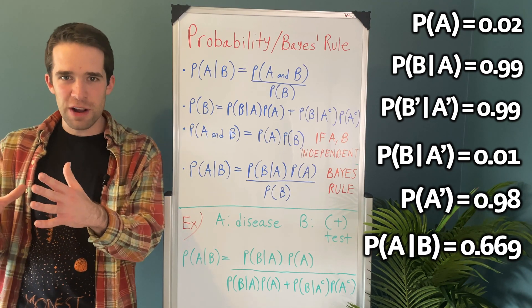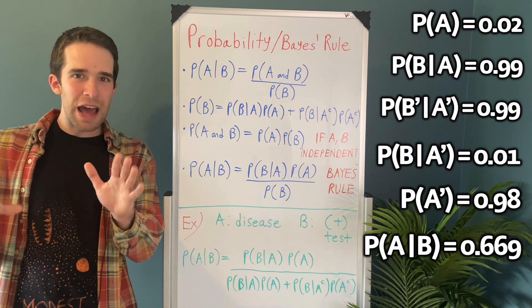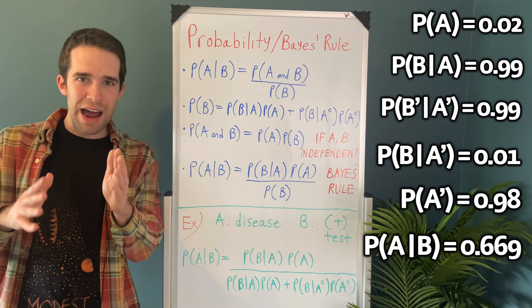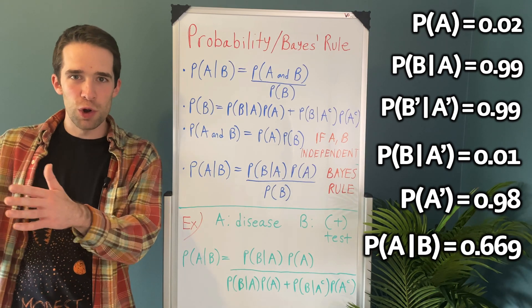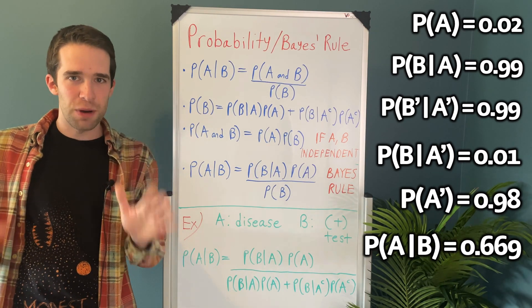So Bayes' rule demonstrates that when you solve for probability of A given B, you don't end up with the super high probability. And it's why when you have these rare events in the real world and you test for them, you end up with this super high false positive rate.